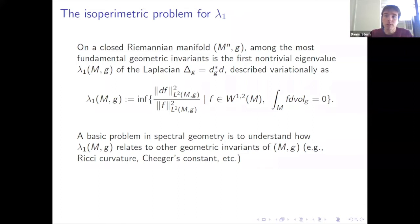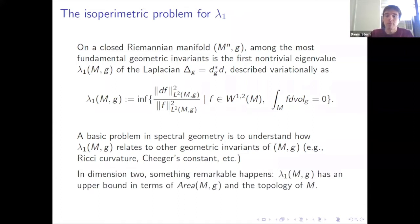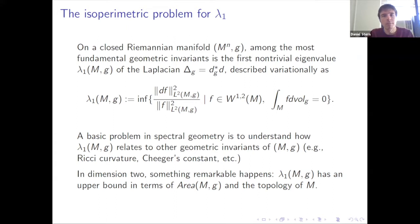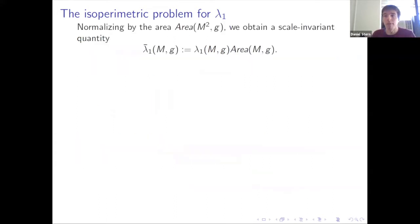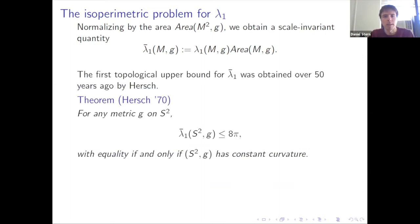Dimension two is very special because in dimension two, given just a volume bound and control on the topology of our surface, we have automatic upper bounds on the first eigenvalue — something which fails in any higher dimension. If we normalize our first eigenvalue by the area of the surface, we get a scale invariant quantity, lambda_1 bar. We just multiply lambda_1 by the area. The first observation about this being bounded from above for a fixed topology goes back to Hersch in the 70s.